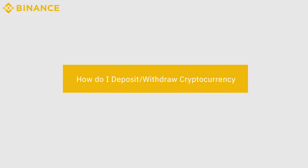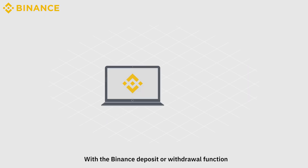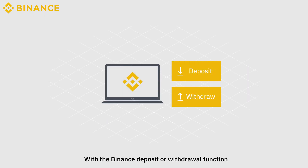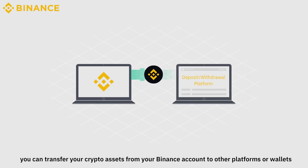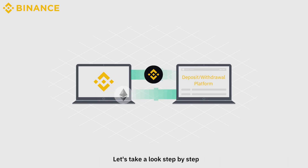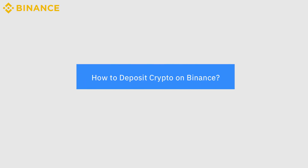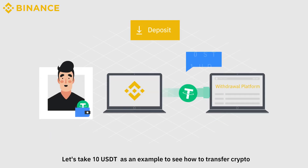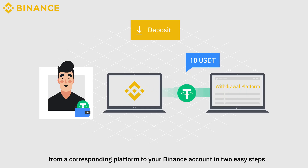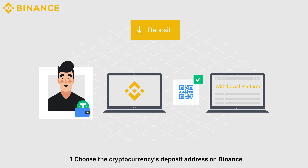How do I deposit or withdraw cryptocurrency? With the Binance deposit or withdrawal function, you can transfer your crypto assets from your Binance account to other platforms or wallets. Let's take a look step by step at how to deposit crypto on Binance. We'll use 10 USDT as an example to see how to transfer crypto from a corresponding platform to your Binance account in two easy steps: one, choose the cryptocurrency's deposit address on Binance; two, copy the deposit address and paste it on the corresponding platform.